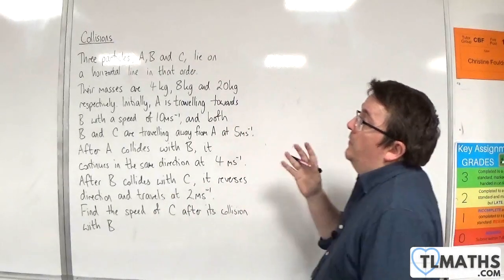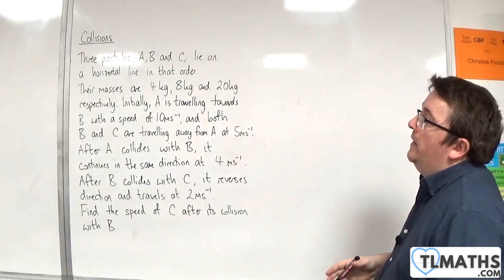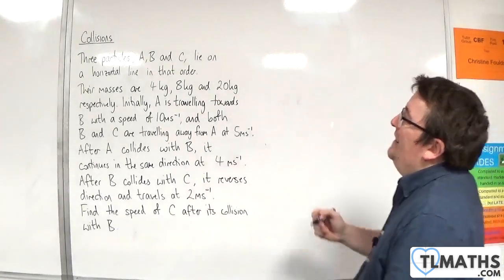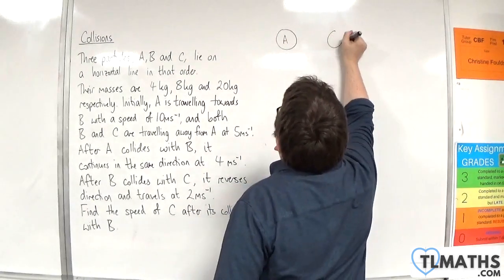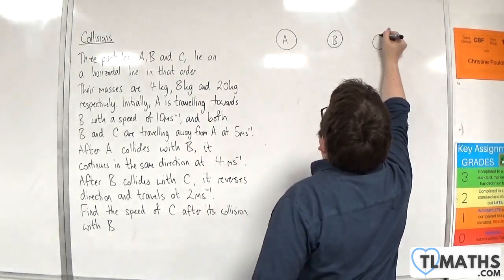So in this example, we have three particles A, B and C, lie on a horizontal line in that order. So we have A, B and C.